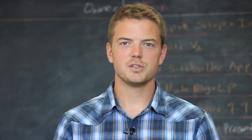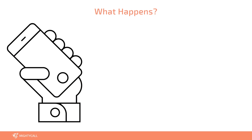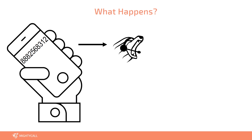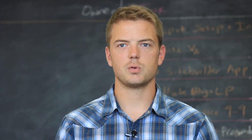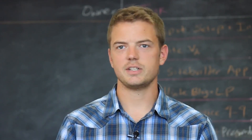So what happens when somebody calls your virtual phone number? Well, for the caller it sounds like any other phone number. They'll dial into a toll-free or a local number, and that'll get forwarded to a number of different devices like your soft phone, Skype phone, cell phone, or landline. It really gives them a lot of options to forward to without having to dial all those phones.